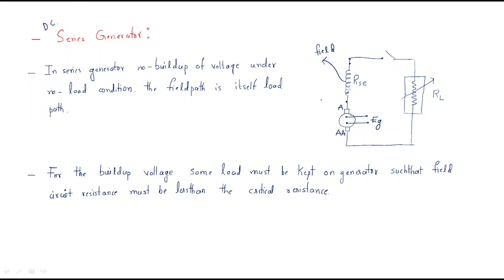The series generator has different characteristics compared to other machines. There is no build-up of voltage under no-load condition. If there is no load, there is no field current — field current is completely zero — so no EMF is developed. The generated EMF EG becomes zero at no load. The reason is that the field winding path is also the load path, so the field current equals the load current.